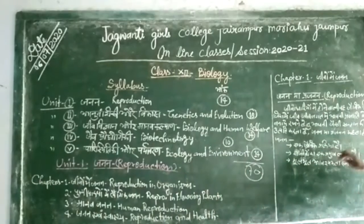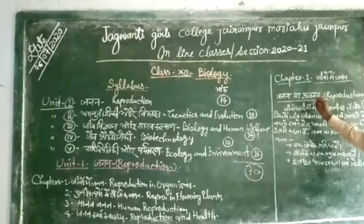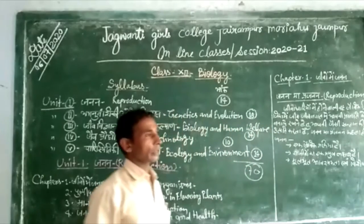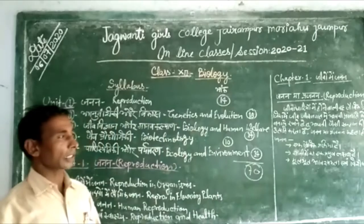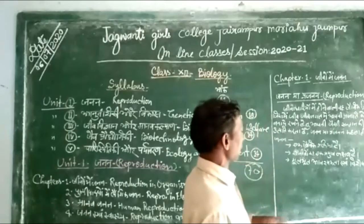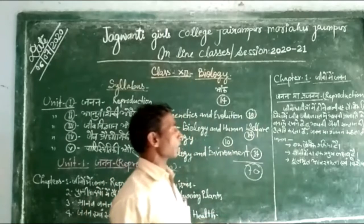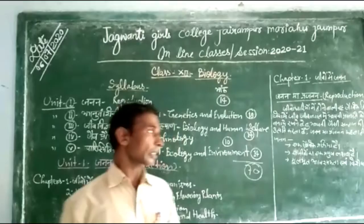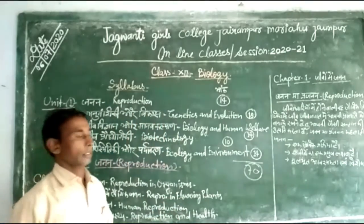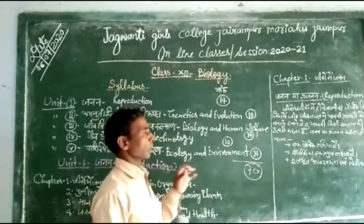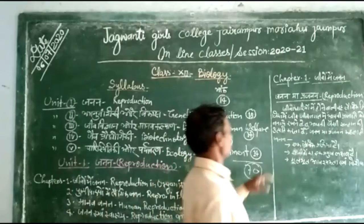In the first chapter, Reproduction in Organisms, the first topic is what is Reproduction. When you read about this, what is reproduction? You can see that all living bodies — and in which human beings create the same kind as themselves. The human beings are built by the whole living bodies.